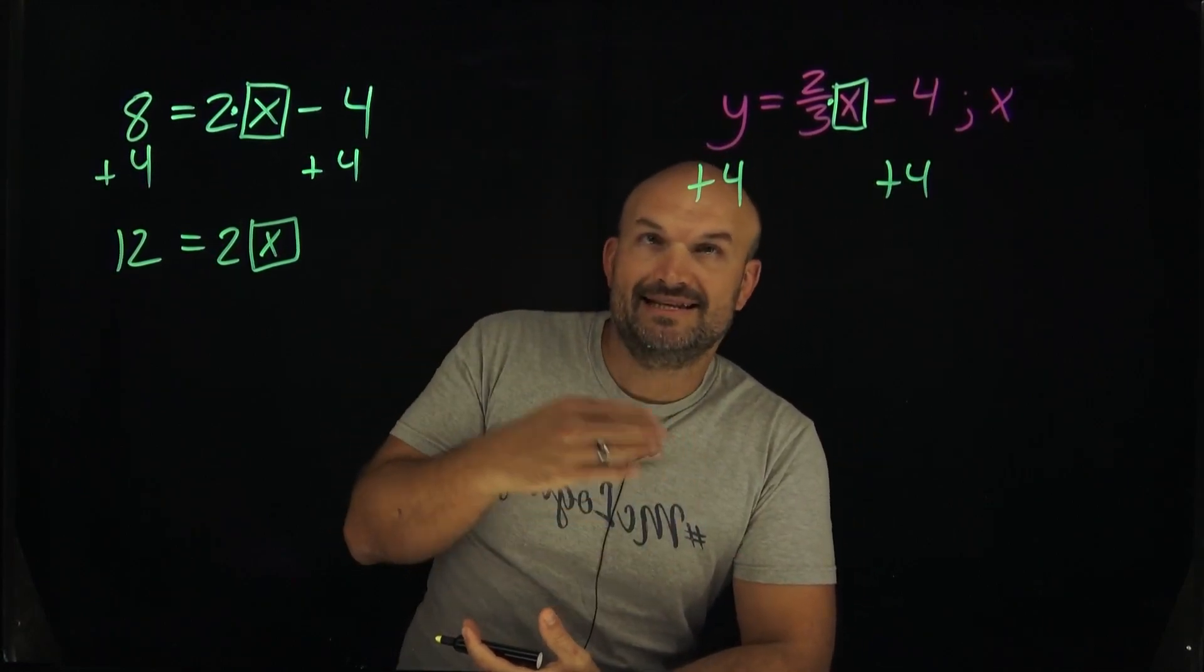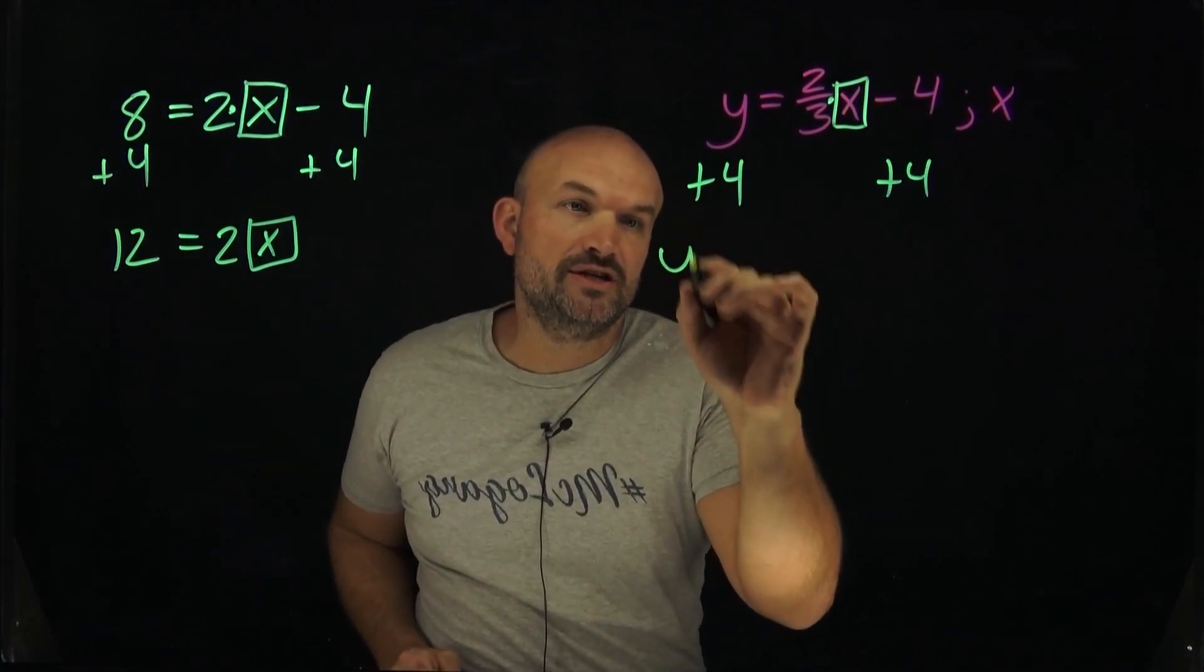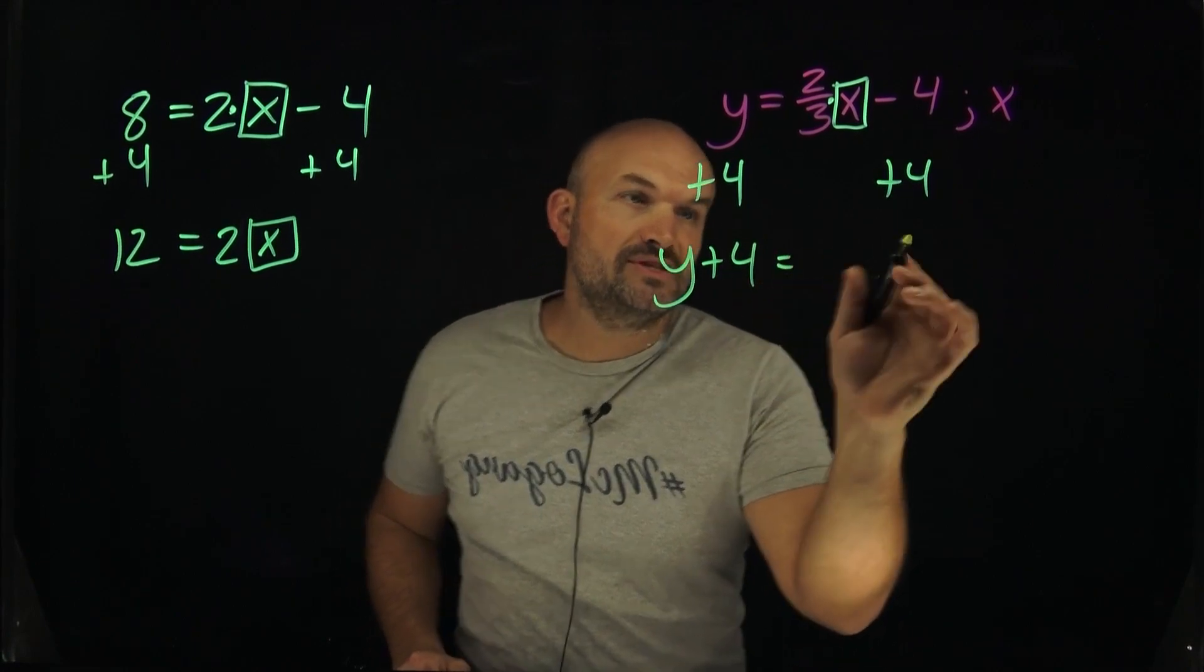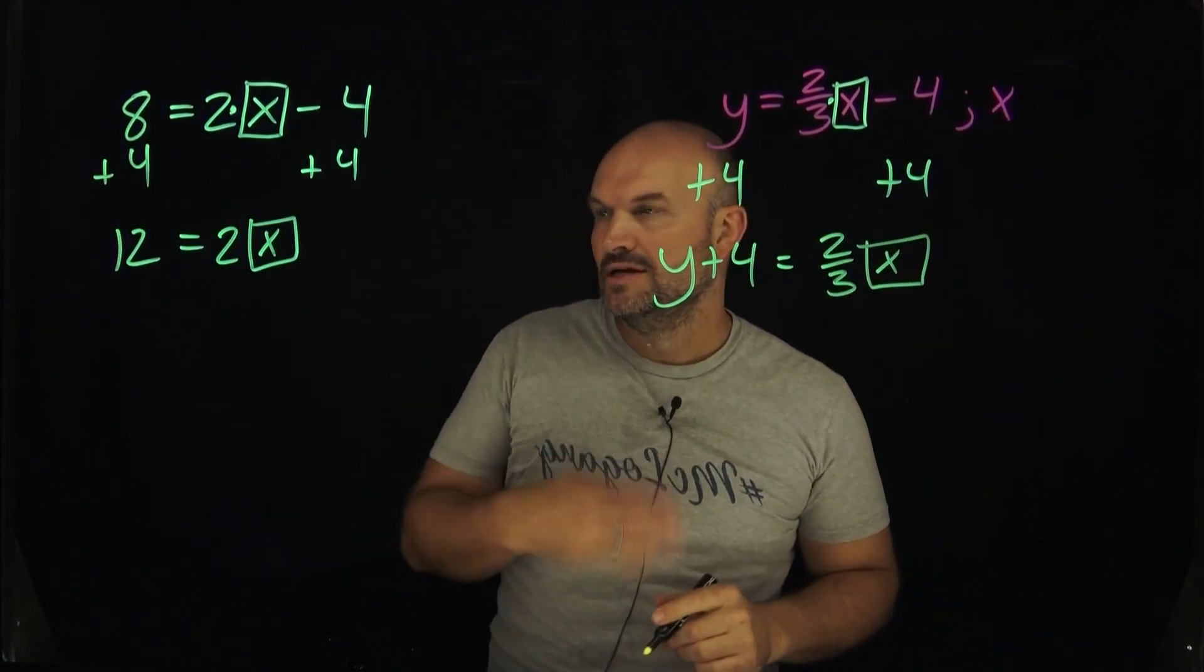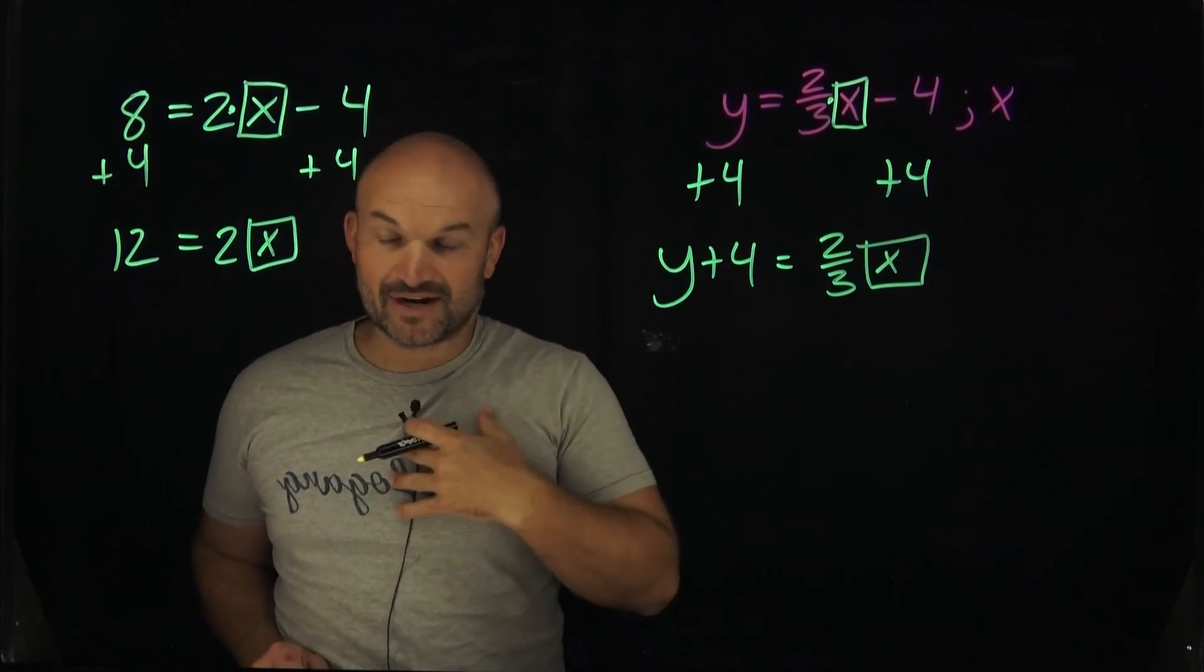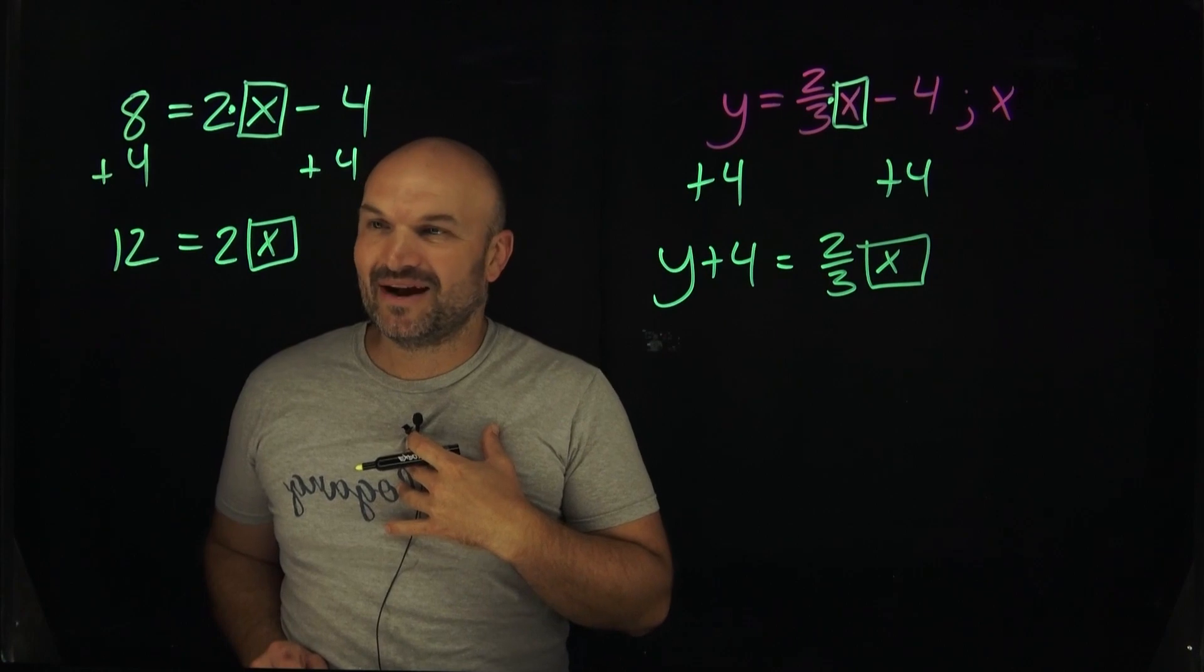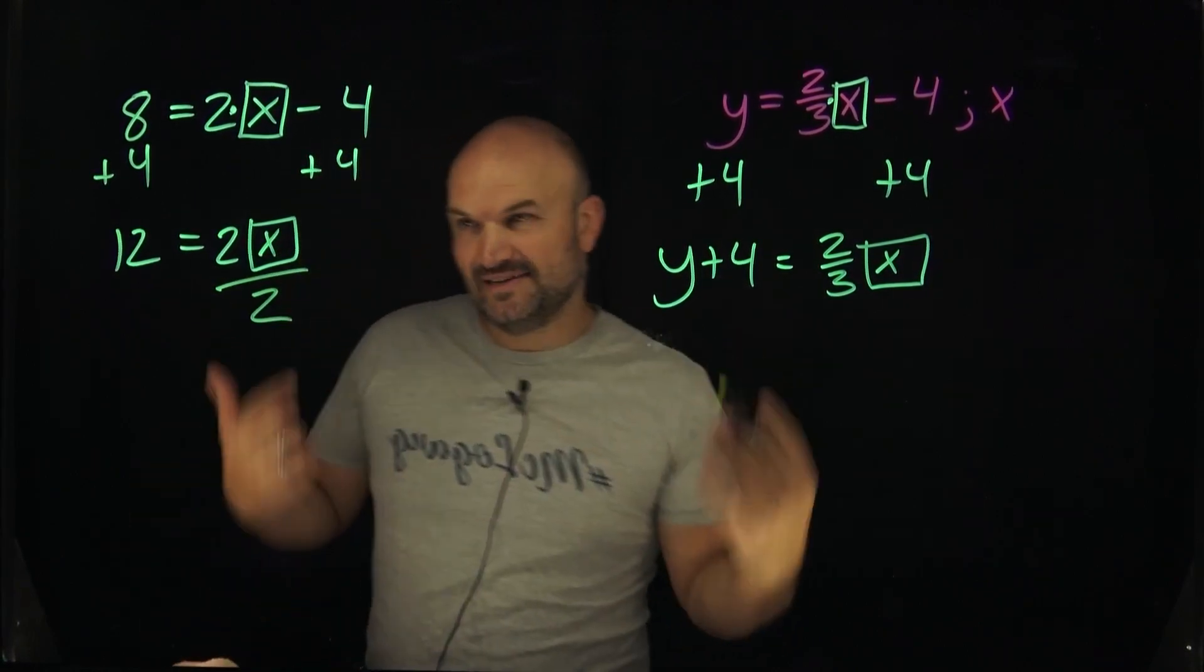But over here I have a y which is an unknown—we don't know the value of y plus 4. So since I can't define that as an actual number like 12 here, I'm just going to write it as the expression y + 4. I'm still going to have here a 2/3 x. Now let's do the next thing. I have 2 multiplied by x, so I need to undo multiplication. I'm going to divide by 2.